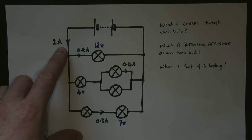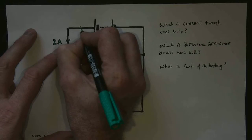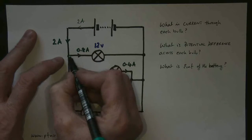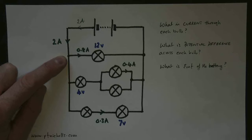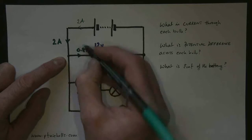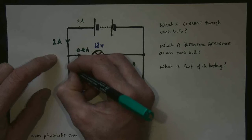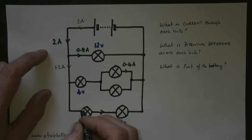We're going to start off with the current. The current comes along from the battery — 2 amps is flowing here, and 2 amps continues to flow there. The principle of Kirchhoff's current law is that whenever you get to any junction, the current going in must equal the current going out. We have 2 amps coming in, 0.8 amps going out that way, so we must have 1.2 amps continuing down that way.